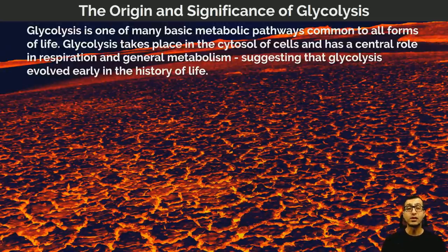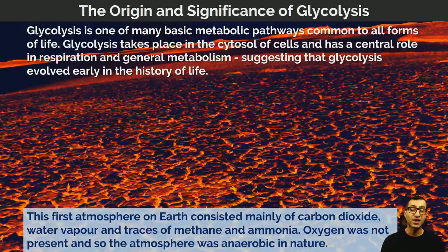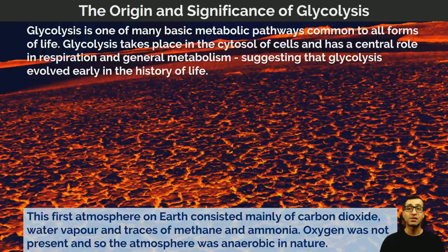Glycolysis is common to all living organisms, prokaryotes and eukaryotes, and so we can consider it to have evolved very early in the history of life on Earth. The first atmosphere of the Earth consisted mainly of carbon dioxide and also some water vapour, with traces of other gases such as methane and ammonia. Oxygen was not present, so the atmosphere was anaerobic in nature.